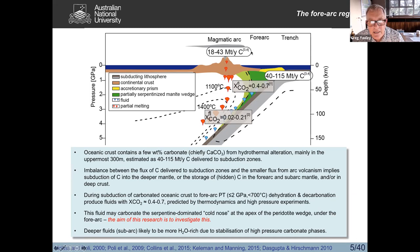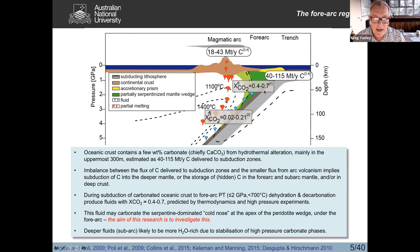We currently estimate there's around 18 to 43 megatons per year of carbon being emitted through arc volcanism each year. Both of these are extremely uncertain figures because they're difficult things to measure. Nevertheless, there seems to be a fairly large imbalance between what goes in and what comes out at the magmatic arc, suggesting that other processes must be happening — maybe carbon is being subducted very deep, surviving the arc processing, and maybe being stored in other places as well.